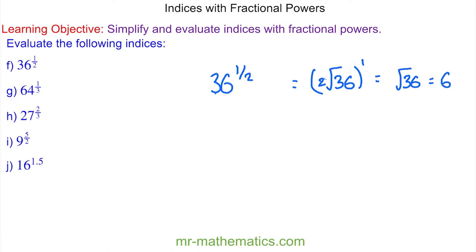For question g, we have 64 to the one third. We take the cube root of 64 — the three is our denominator — and we're raising it to the power of one, which we don't need to include. The cube root of 64 is four. Do you want to try and work out questions h, i, and j? You can pause the video and resume it when you're ready.